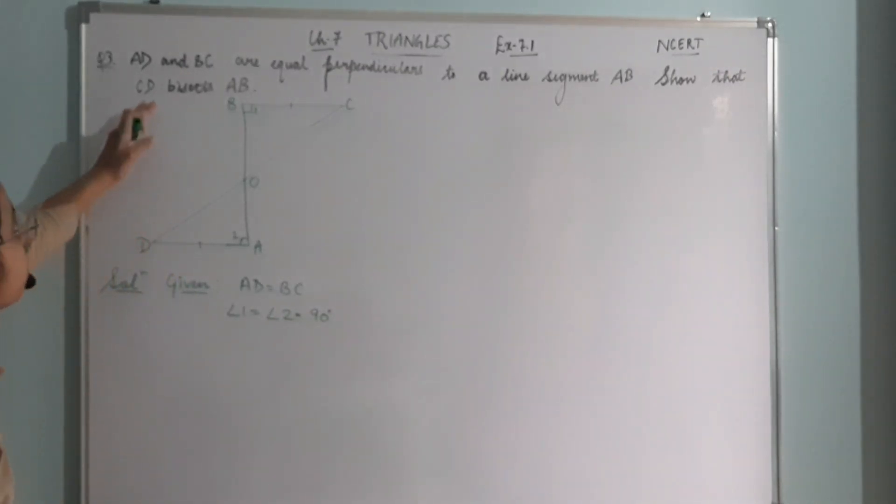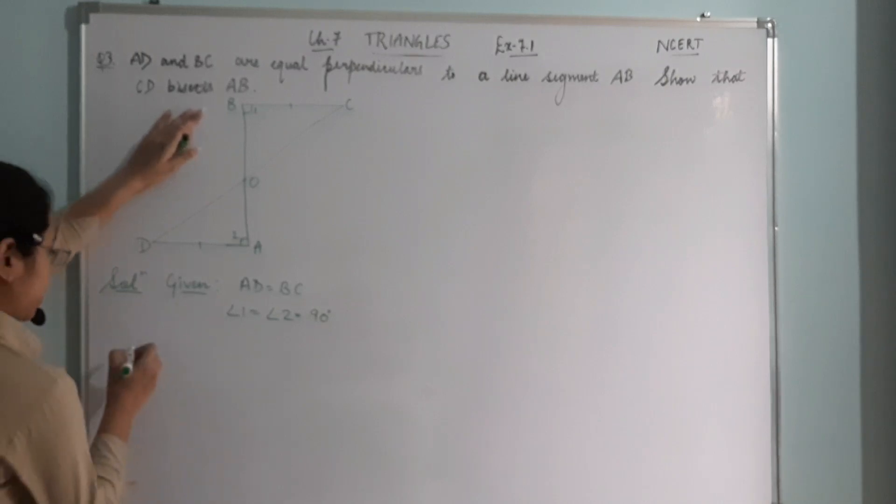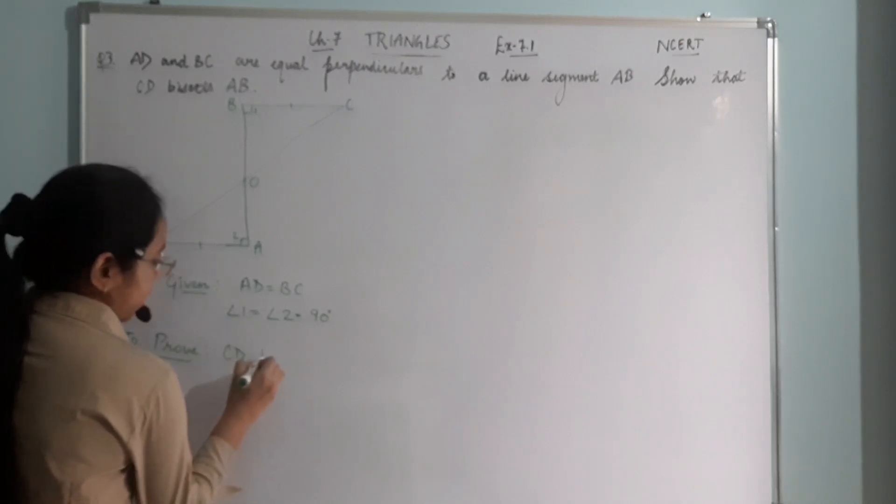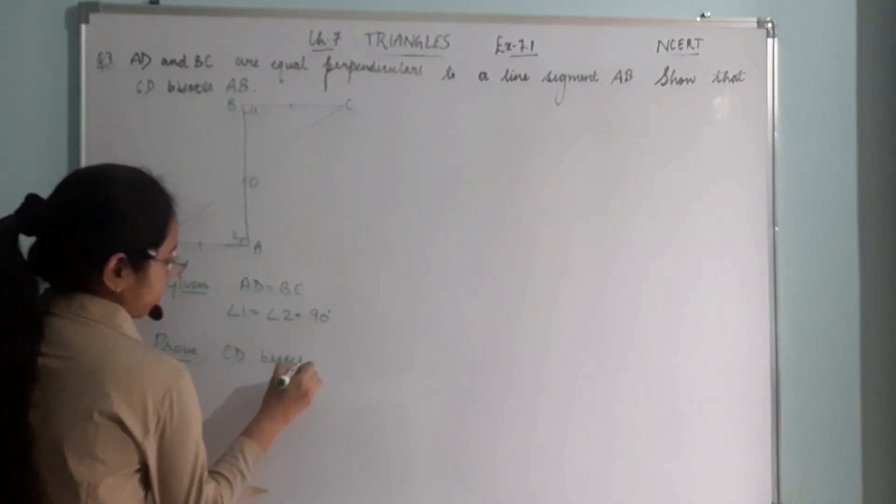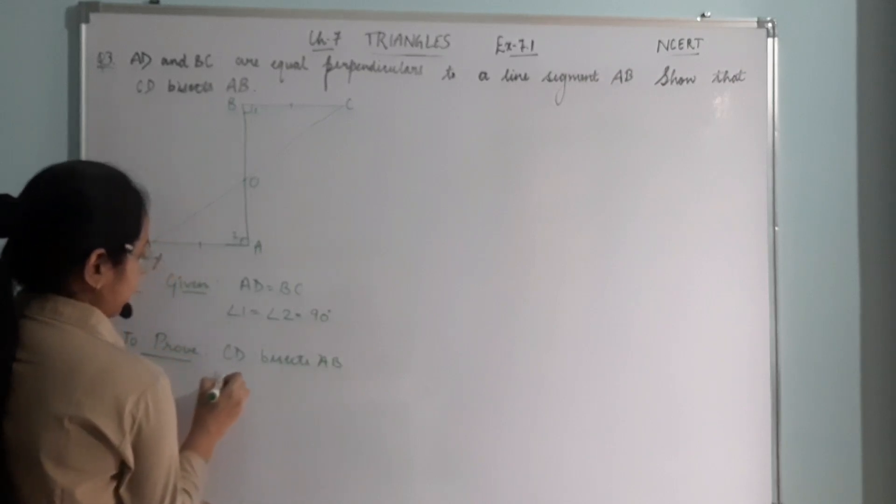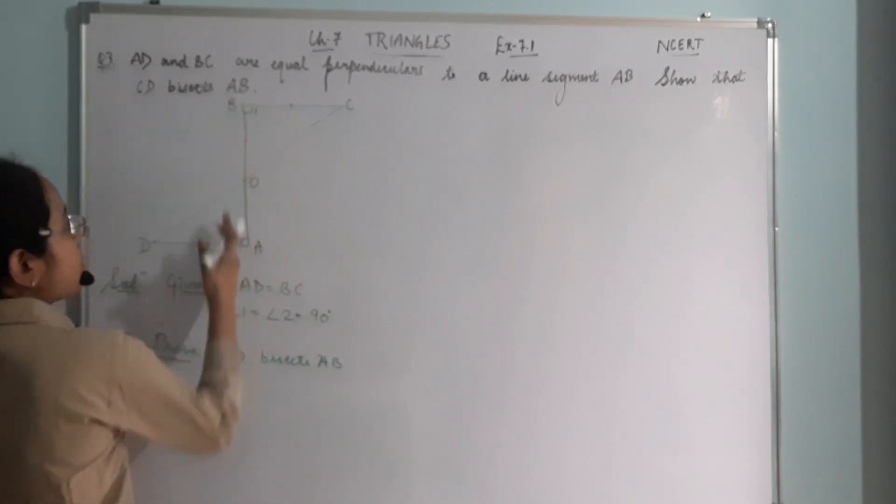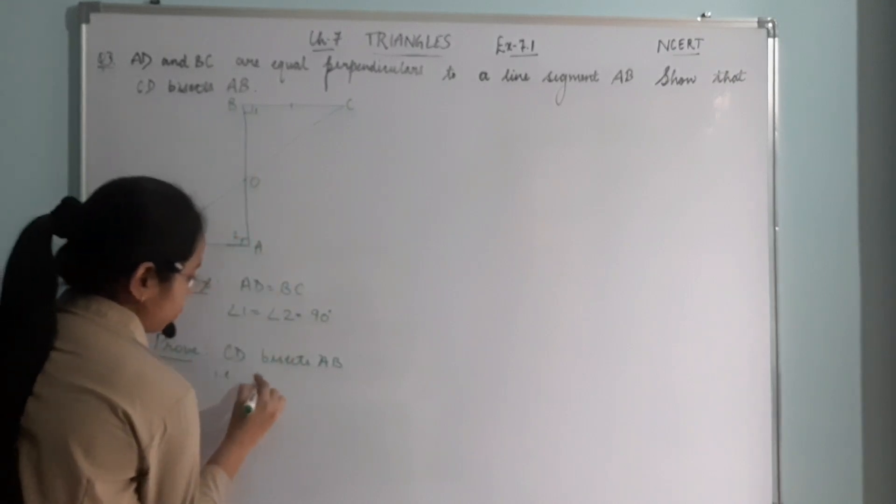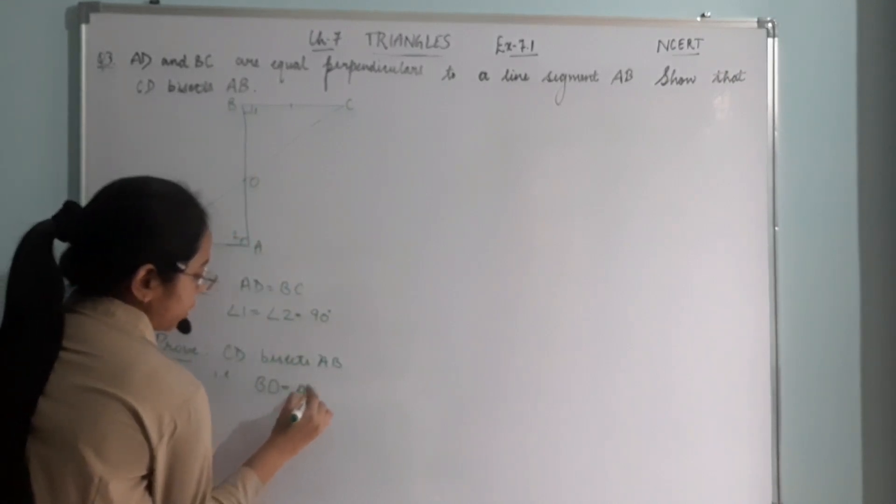Now we have to prove that CD bisects AB. So to prove: CD bisects AB, that is CD bisects AB, meaning BO equals AO. We have to prove this.